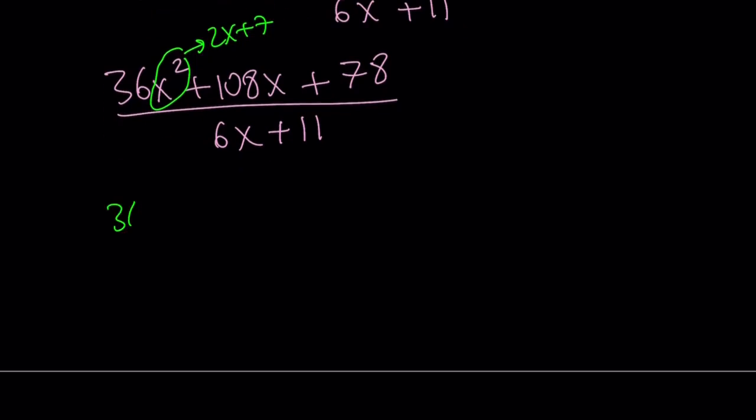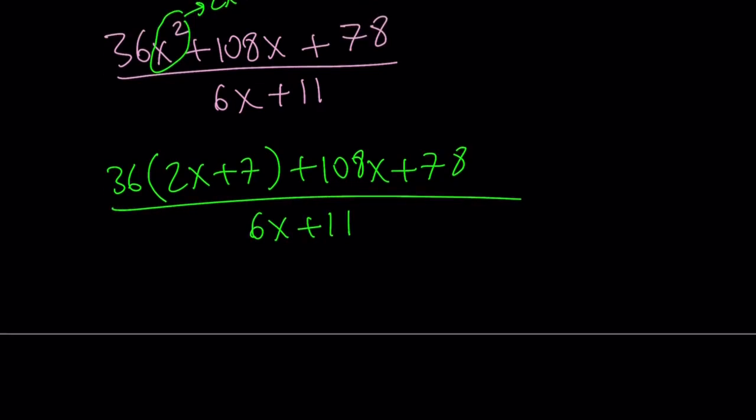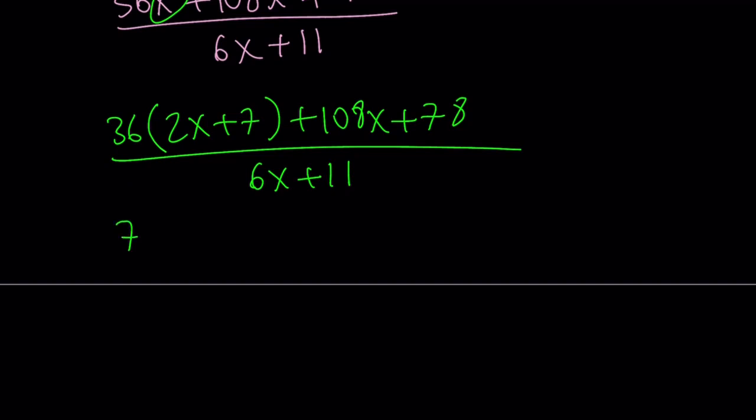So, I'm going to replace x² with 2x + 7. Notice that I'm not really finding the value of x, but constantly replacing x² with 2x + 7. That is the formula. Now, I'm going to go ahead and distribute 72x + 252, right, I think, plus 108x + 78 divided by 6x + 11.